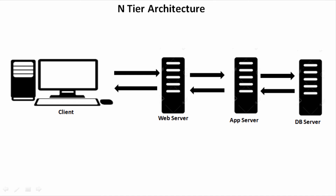I wanted to start with the web architecture and then show you how similar the SAP architecture is — in fact SAP architecture is much simpler. For a typical web architecture you have a web server, app server, and a database server, or sometimes a combined web-app server. From the client, the request first goes to the web server, from there to the app server if required, then to the database, and the response comes back through the app server to the client.